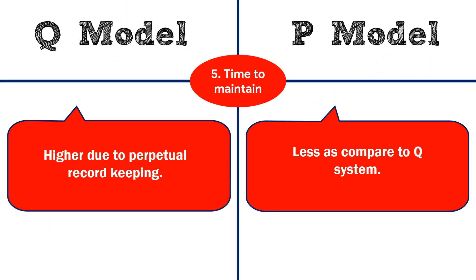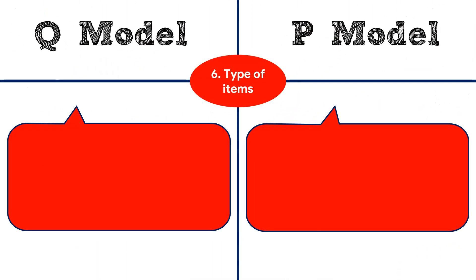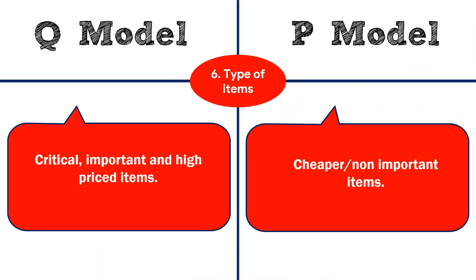Fifth, time to maintain: the Q model takes higher time due to perpetual record keeping, whereas the P model takes less time as records are kept periodically, not perpetually. Sixth, type of item: in the Q model, critical, important, and high-price items are kept, whereas in the P model, cheaper and non-important items are kept. That's all about today — hope you like this video, please give it a thumbs up and subscribe. Thank you!